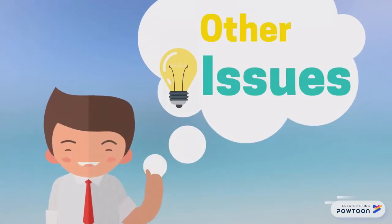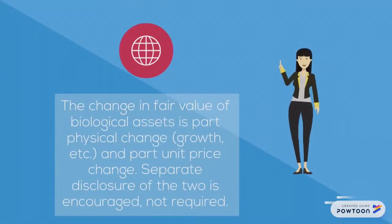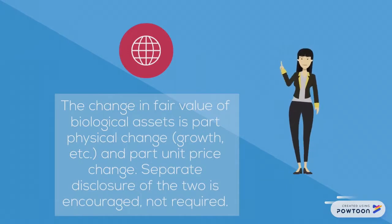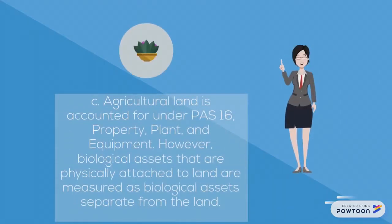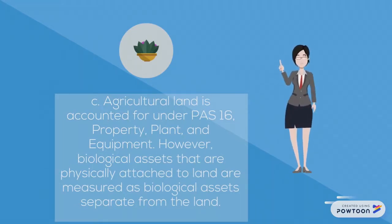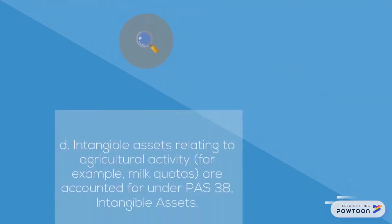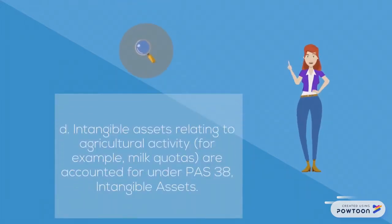Other issues: A. The change in fair value of a biological asset is part physical change and part unit price change; separate disclosure of the two components is encouraged but not required. B. Fair value measurements stop at harvest; PAS 2 applies after harvest. C. Agricultural land is accounted for under PAS 16 property, plant, and equipment; however, biological assets physically attached to the land are measured as biological assets separate from the land. D. Intangible assets relating to agricultural activity — for example, milk quotas — are accounted for under PAS 38 intangible assets.